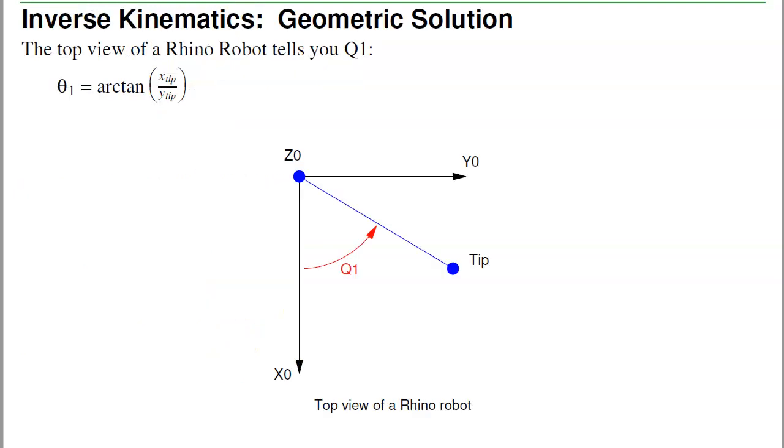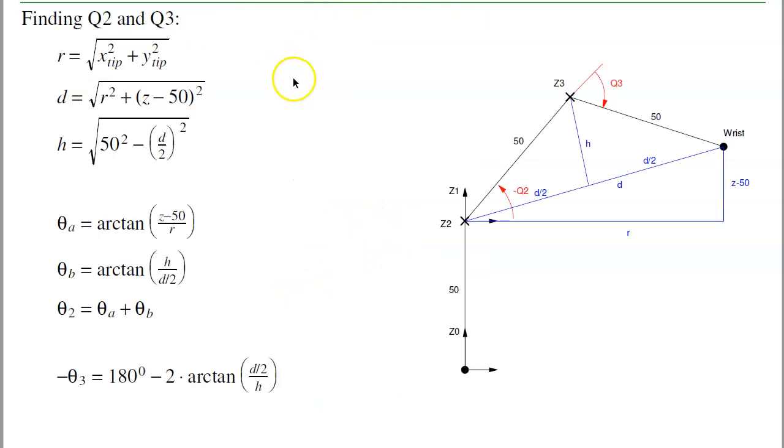That's method number two, a geometric solution. If you look at the top of a Rhino robot, I've got the base coordinates right here. This is the top. The rotate moves around. The tip of the robot moves. The base angle, theta 1, is fairly easily defined. It's just the arctangent of y over x.